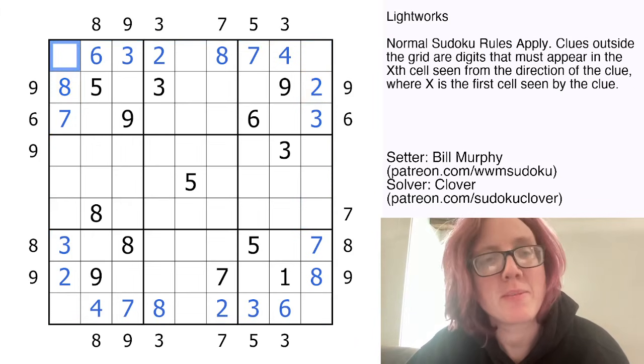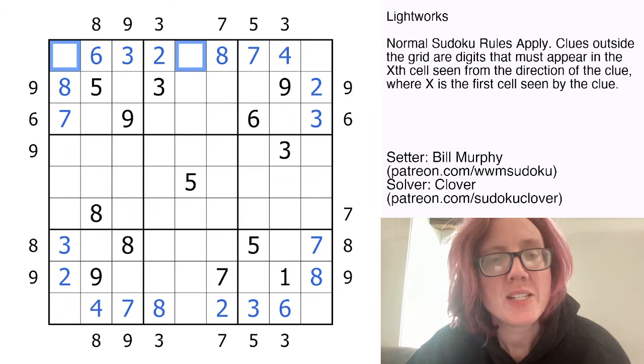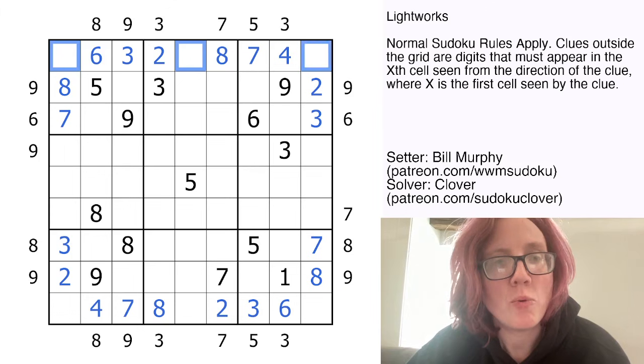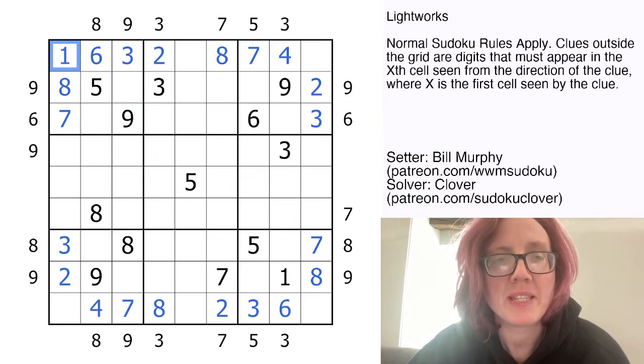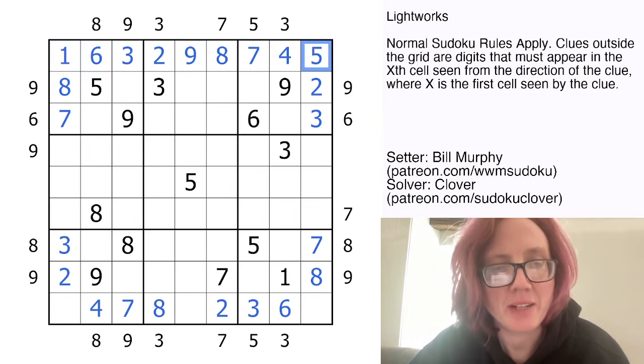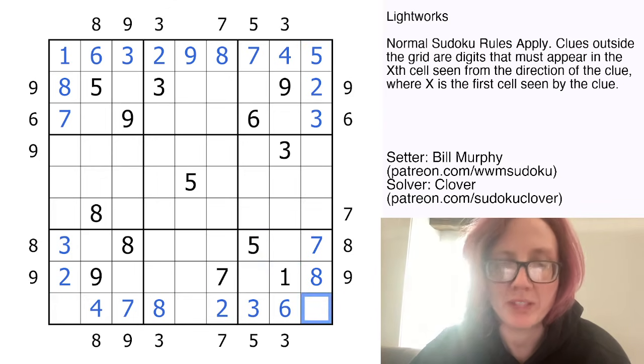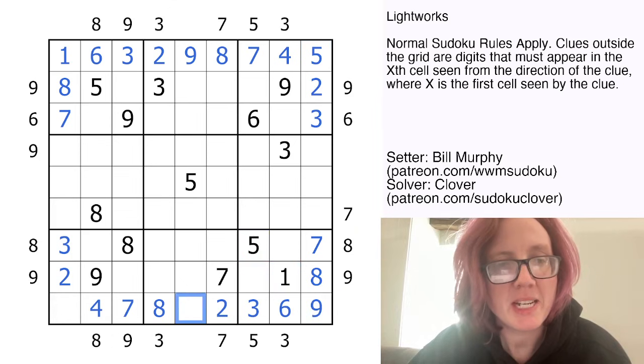So let's do some Sudoku next before we resume. So in this row we need to place a 1, a 5, and a 9, and because we already have 5 and 9 here, we're going to make that a 1, which makes this a 9 and a 5. Similarly here we need a 1, a 5, and a 9. We already have a 1 and 5 in this region, so that's going to be a 9. That's a 1 and that is a 5.